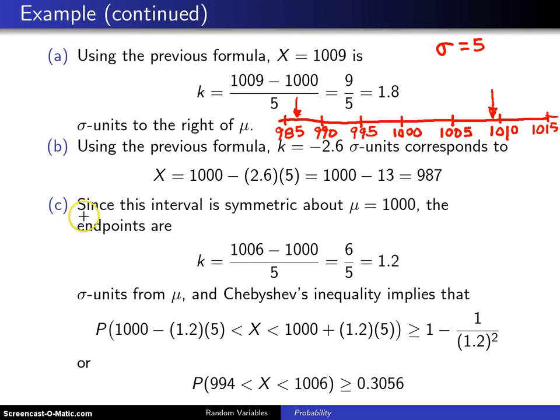Finally, part C is to use Chebyshev's inequality to get a bound on the probability that there are between 994 and 1006 screws in the box. And that happens to be a symmetric interval about 1000, which means Chebyshev's inequality can be used, and the endpoints of that inequality are K equals 1006 minus 1000 divided by 5, 6 fifths or 1.2 sigma units from mu.